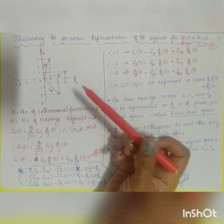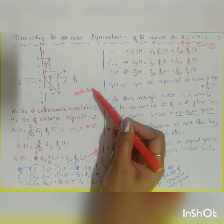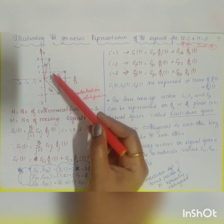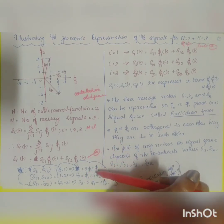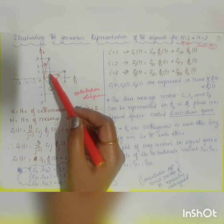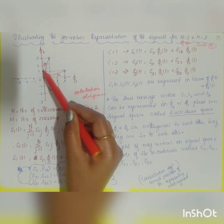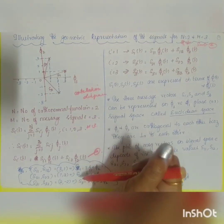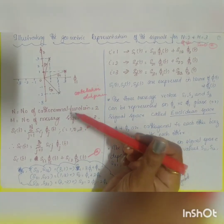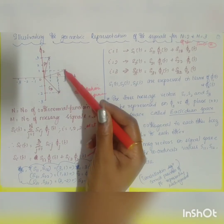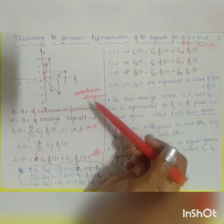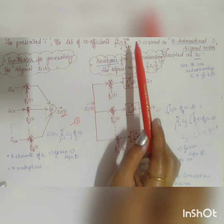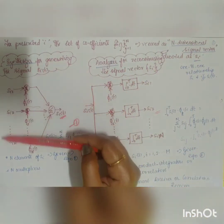These are represented in the Euclidean space, also called the constellation diagram. With phi_1 and phi_2 as axes, the three signal vectors are: s1 at coordinate (3, 1), s2 at (1, 3), and s3 at (2, −2). This is the geometric representation of the signal for n=2 and m=3. For prescribed i, the set of coefficients s_ij (j=1 to N) forms an N-dimensional signal vector.